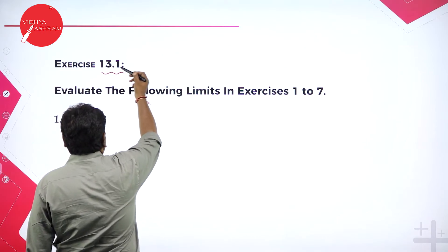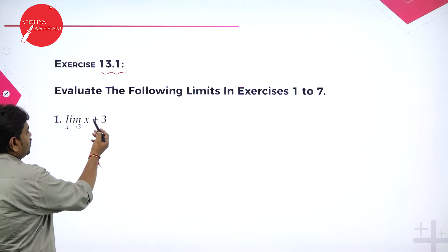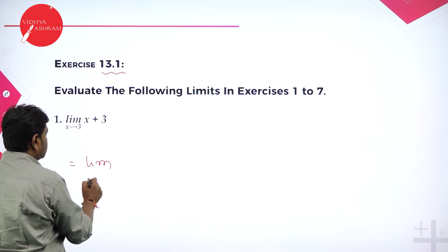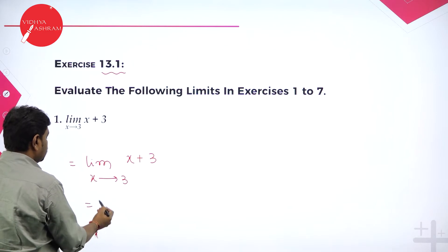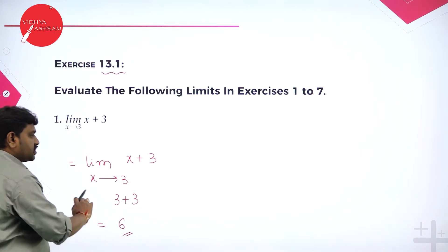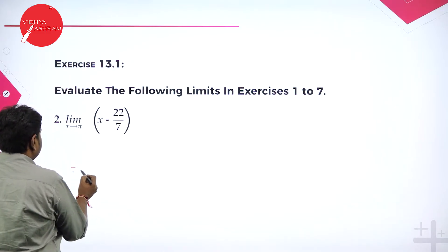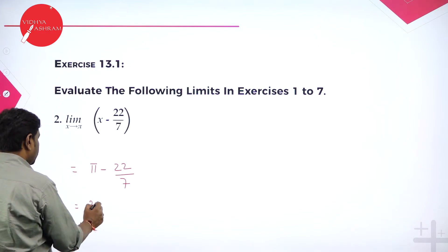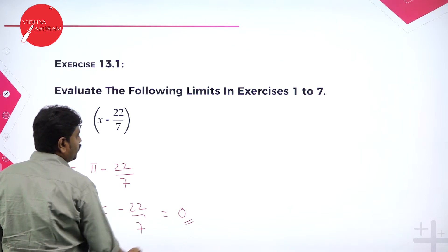Now we will start with simple problems of exercise 13.1 — evaluate the following limits from 1 to 7. Problem 1: limit x tends to 3, x plus 3. In the place of x put 3, so it becomes 3 plus 3, which is 6 — you got a finite value. Problem 2: limit x tends to pi, x minus 22 by 7. In the place of x put pi, so it becomes pi minus 22 by 7. Since pi is 22 by 7, we get 0 — it is a finite form.